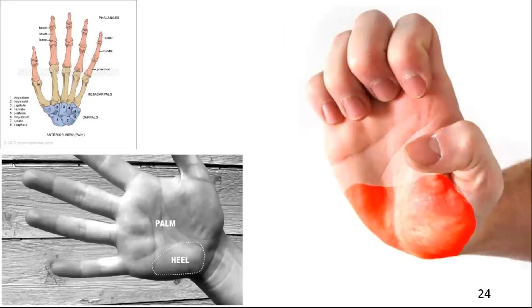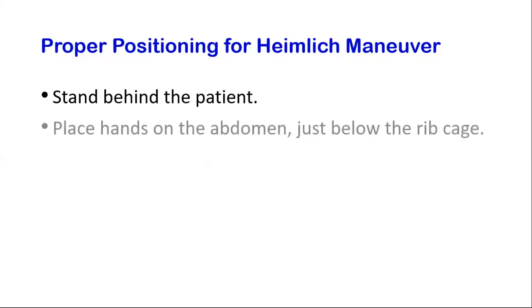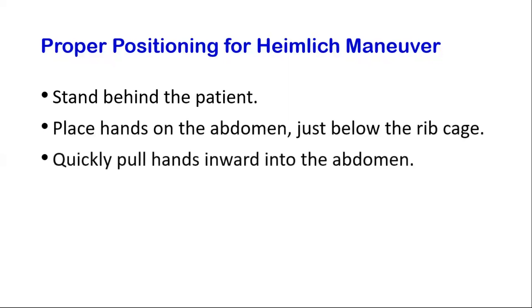The heel of the hand is the area at the base of the metacarpal bones in the proximal part of the palm. Now let's look at the proper positioning for the Heimlich maneuver. Stand behind the patient and place your hands on their abdomen just below the ribcage. Quickly pull your hands inward into the abdomen. This action uses any remaining air in the lungs to try and dislodge the obstruction from the airway.